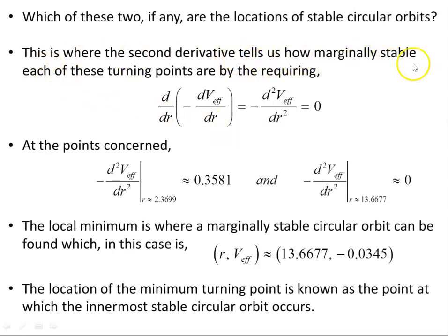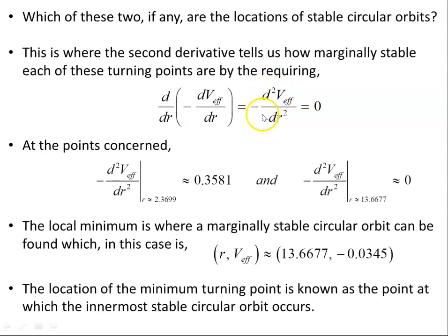This is where the second derivative tells us how marginally stable each of these turning points are, by requiring that the second derivative of the effective potential is equal to zero. Now this negative set to zero is equivalent to d²V_eff/dr² equals zero. It doesn't matter whether we have the negative here or not — the second derivative of the effective potential is set to zero. This is where we investigate stability.